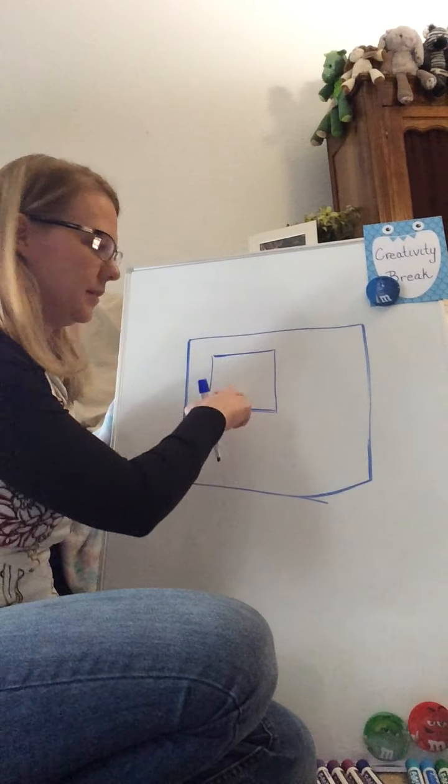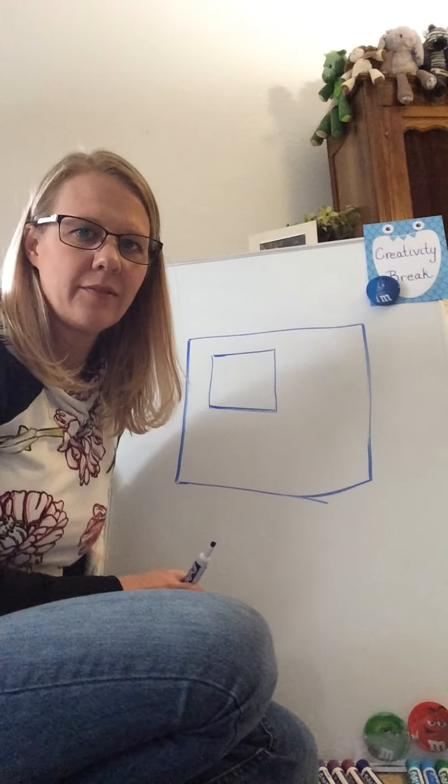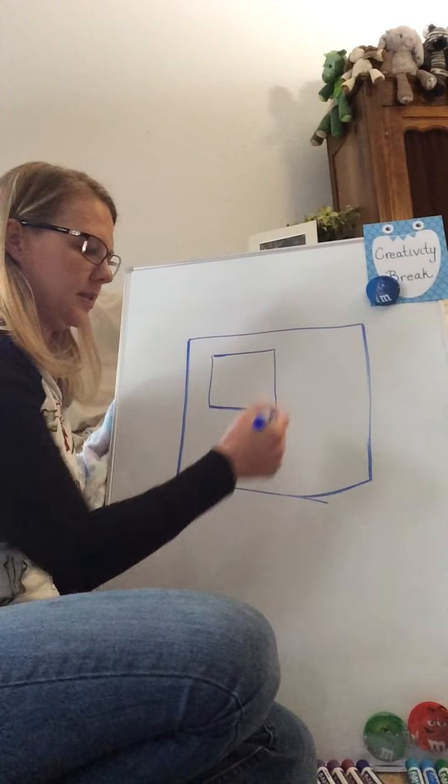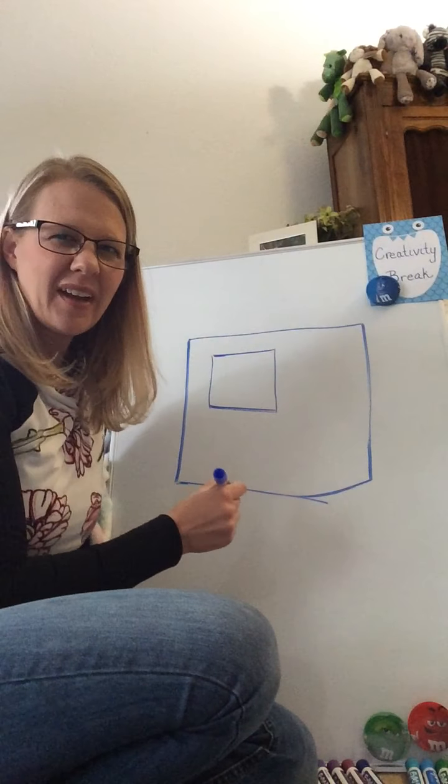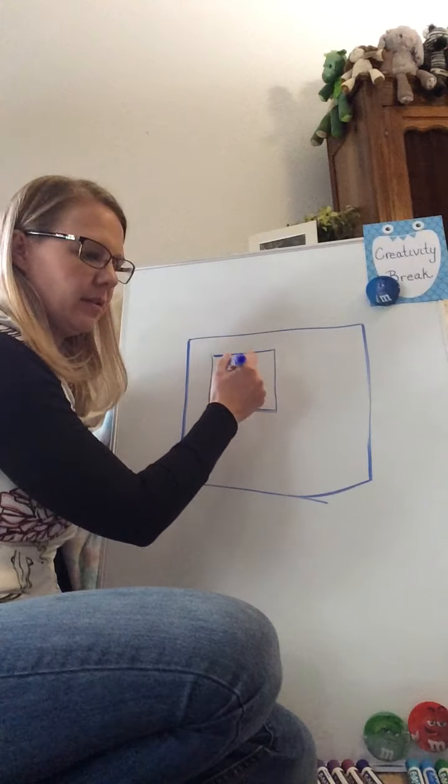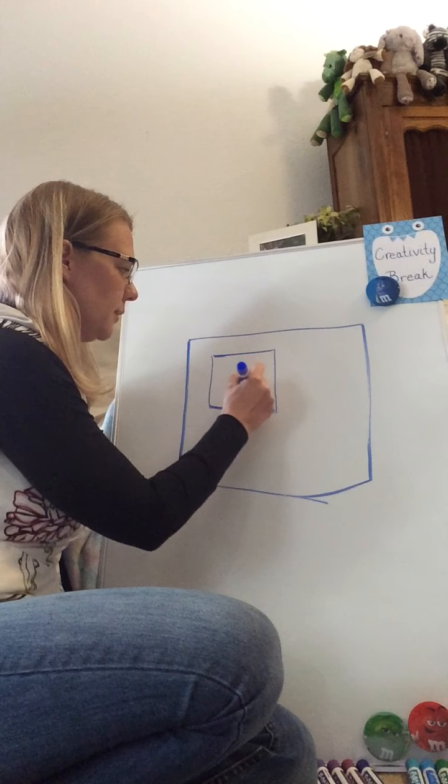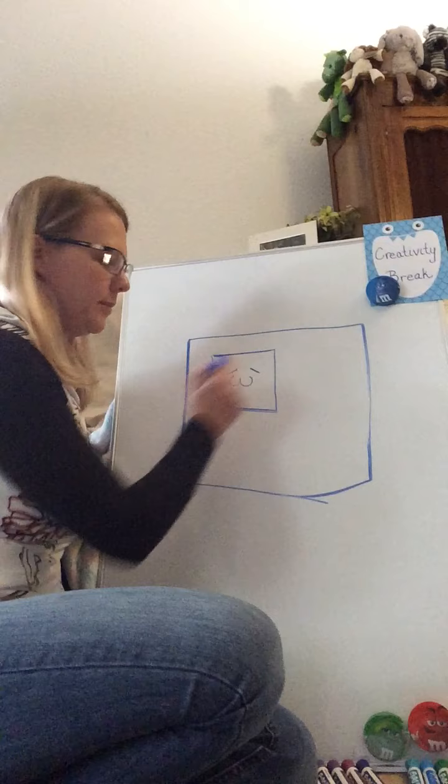This smaller square is going to become our elephant's head. We're going to start with his face. Our elephant's going to be kind of sleepy, so we're going to draw his eyes closed. Draw me kind of a W shape, give him some eyebrows.